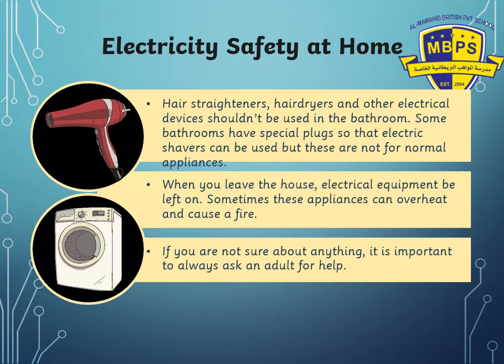Most importantly, when you leave your house, switch off all electrical appliances — televisions, chargers, air conditioning, fans, and lights. Leave the fridge and freezer on so your food doesn't spoil. Leaving appliances on wastes energy and risks a short circuit during a power outage. Also, if you don't know anything about an electrical appliance, ask your parents first, learn from them, and then start using it.